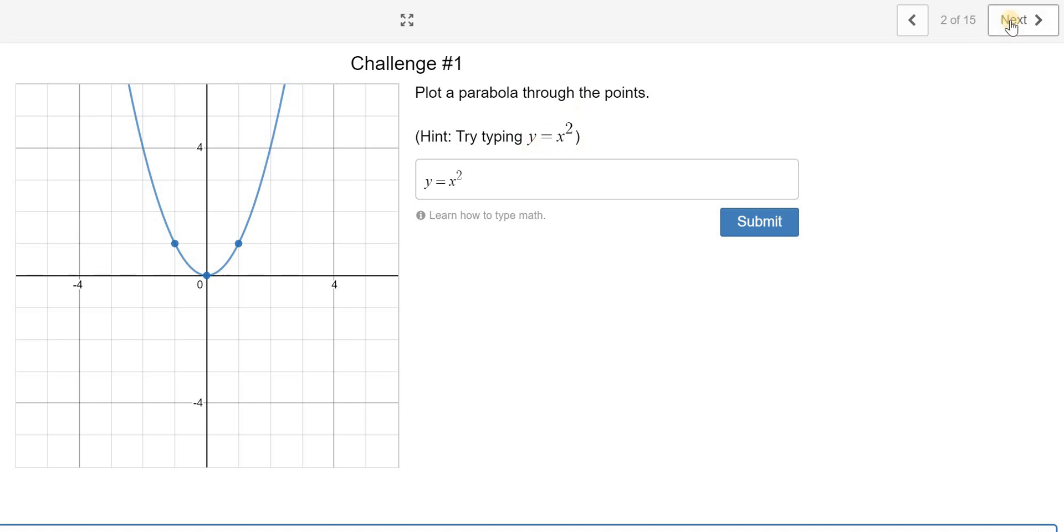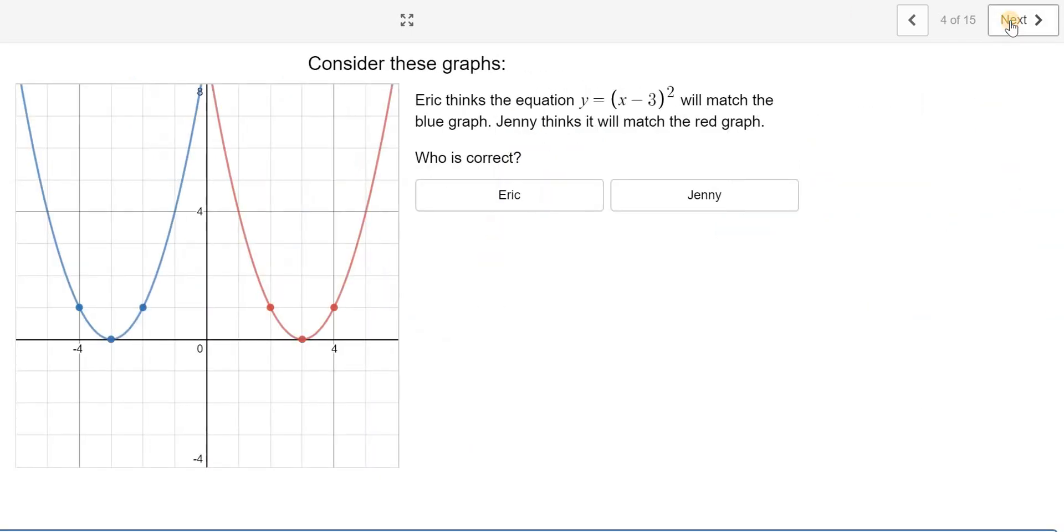Y equals x squared here, and then it asks you to work with this. So you have already learned about horizontal translations, and that's what this question is asking. Who is correct?